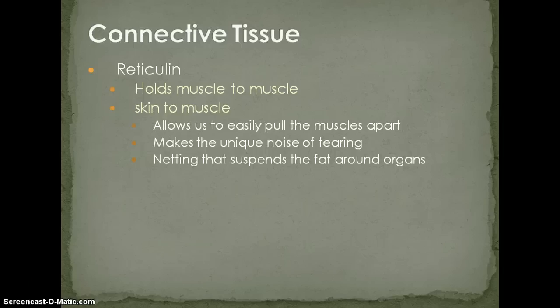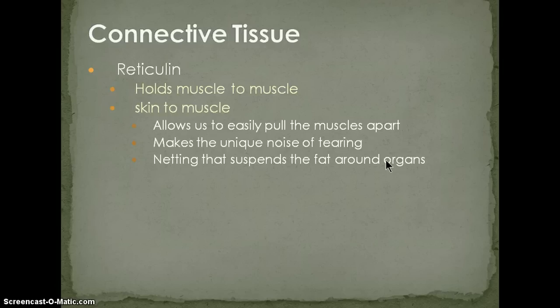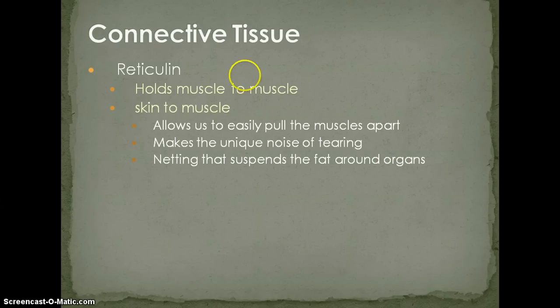The reticulum is also the netting that suspends fat around organs. When we were taking fat off the ribeye, certain fat was good for adding to ground beef — like for an 80/20 blend — but fat with reticulum in it is not great for grinding. It always gets ground up and gives you that grisly texture instead of a clean feel.